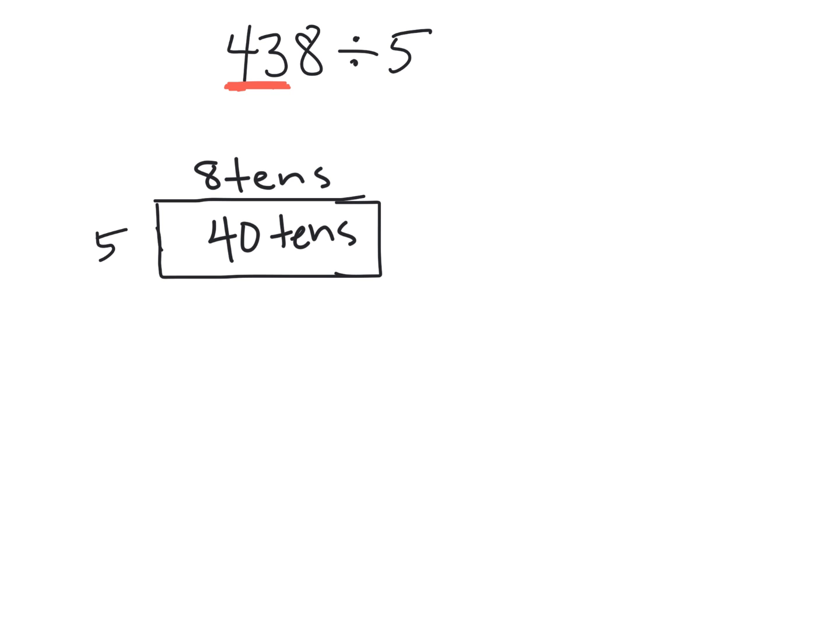And so now we've got three tens left over because we had 43 and 38. So now we're going to extend this because now we know that this is going to be 38 units, because we've used 40 tens over here. So now if the height is five, what is the length for us to get to be something close to 38 square units?